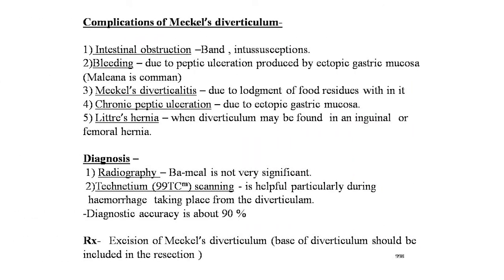Complications of Meckel's diverticulum include: intestinal obstruction due to band and intussusception; bleeding due to peptic ulceration produced by ectopic gastric mucosa; Meckel's diverticulitis due to lodgement of food residues; chronic peptic ulceration; and Littre's hernia, when the diverticulum is found in an inguinal or femoral hernia. Diagnosis: barium meal is not very significant. Technetium-99m scanning is helpful during hemorrhage, with diagnostic accuracy of about 90%. Treatment is excision of Meckel's diverticulum; the base should be included in the resection.